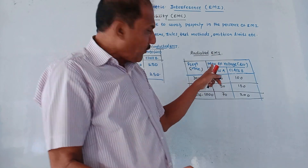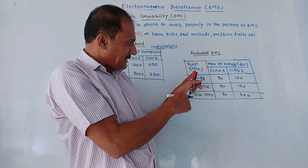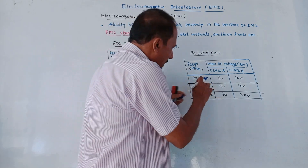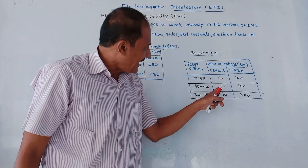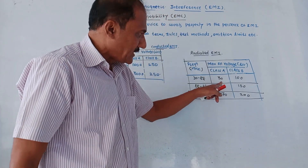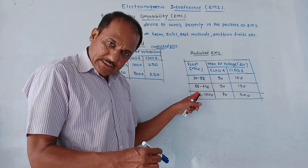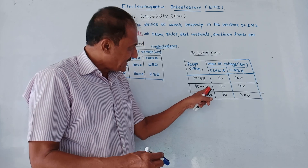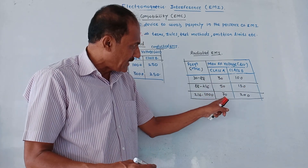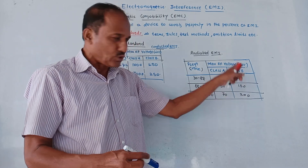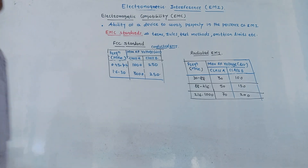For radiated EMI, again using the same parameters with frequency measured in MHz: if the range is 30 to 88 MHz, then for class A the maximum RF voltage is 30 micro-volt, and for class B it is 100 micro-volt. For the frequency range 88 to 216 MHz, the values are 50 and 150 micro-volt respectively. For 216 to 1000 MHz, class A is 70 micro-volt and class B is 200 micro-volt. This is about EMC and EMC standards.